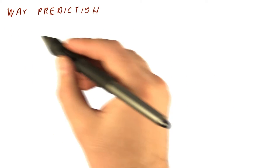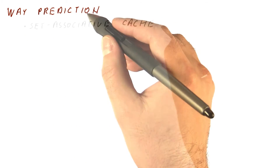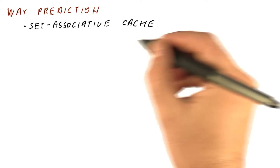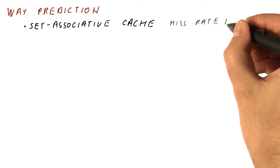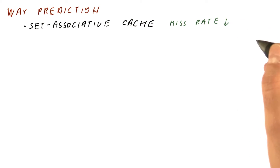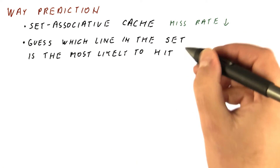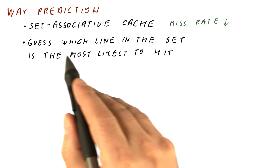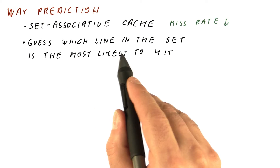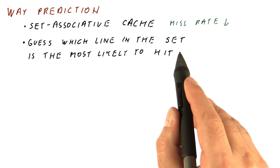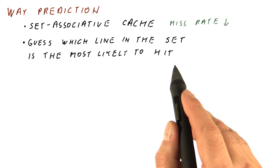One way of cheating on associativity is called way prediction. We start with a set associative cache, which has a low miss rate but would have a slow hit time. What we do is guess which line in the set is the most likely to hit.